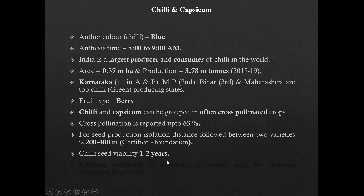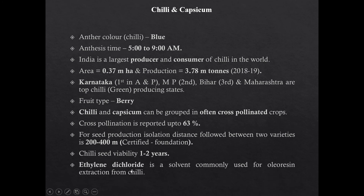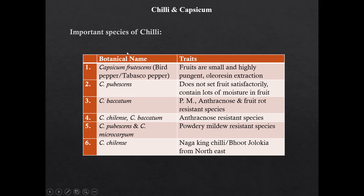Chili seed viability is one to two years. Ethylene dichloride is the solvent commonly used for oleoresin extraction from chili. Some important species of chili: Capsicum frutescens, also known as bird pepper or tobacco pepper, is having small and highly pungent fruit. It is used for oleoresin extraction.